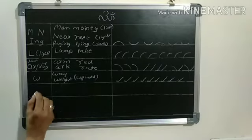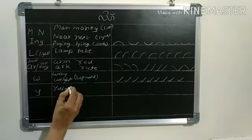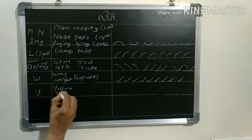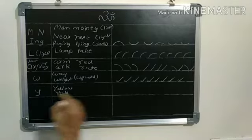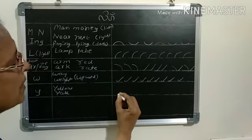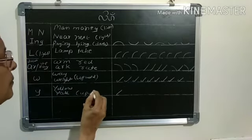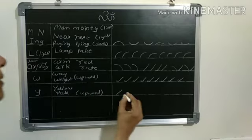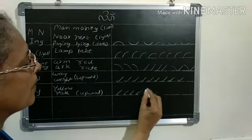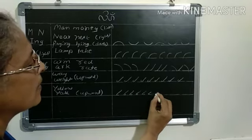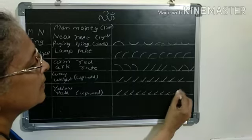Then next word, Y. Y for example, yellow, yak. Y is opposite of W. Upward only, this also upward only. One hook will come.